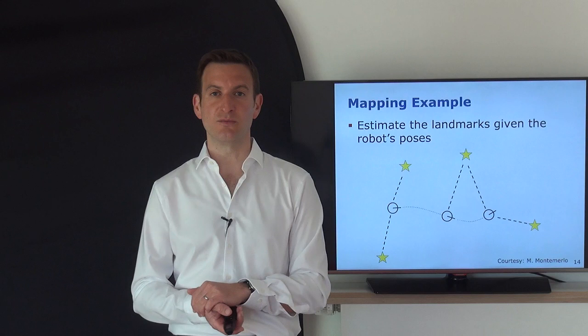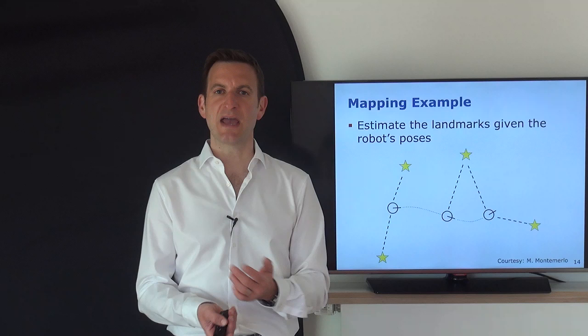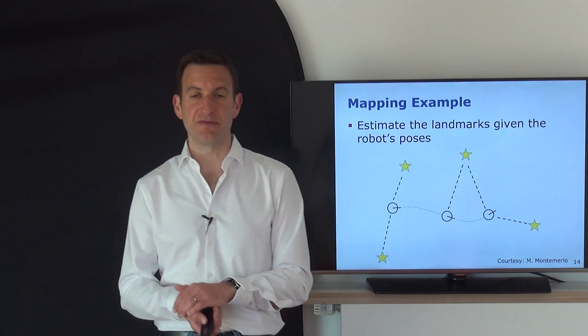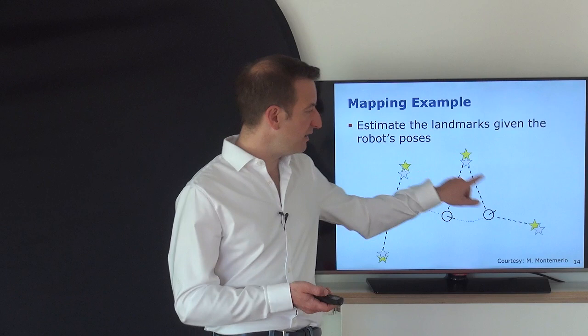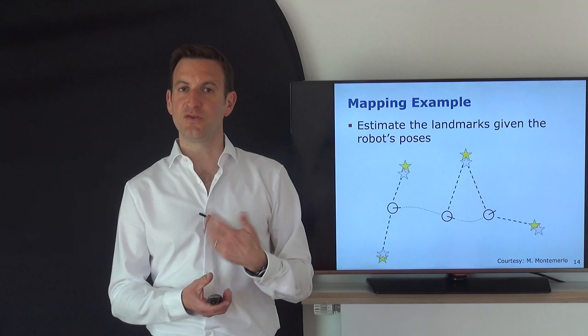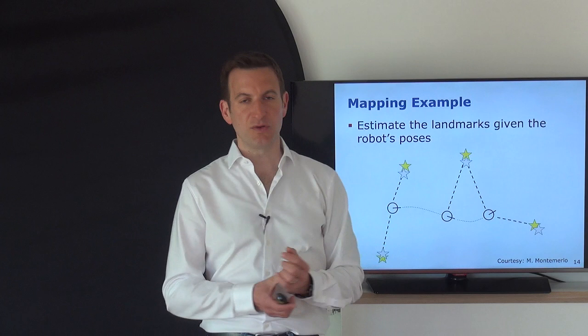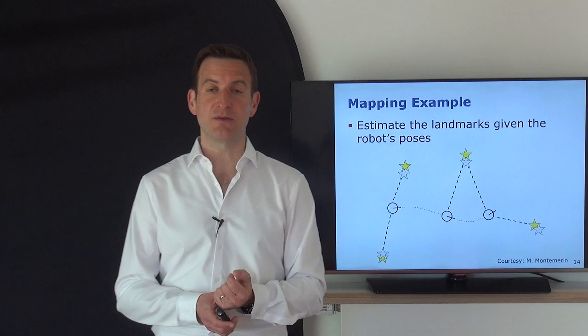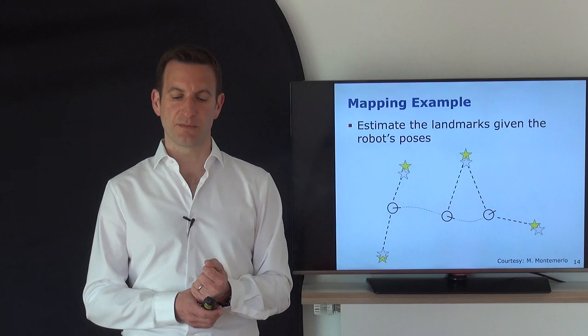In the mapping example, it is slightly different. We assume we know our relative movement but still have noise in sensor observations, and we want to build a map — the location of landmarks. While the robot moves and takes observations, we see the assumed positions of landmarks estimated by the robot. The offset between the true poses and estimated poses is the result of noise in sensor observations.